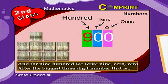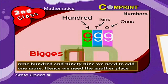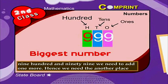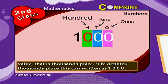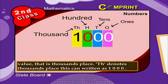For seven hundred, seven zero zero. For eight hundred, eight zero zero. And for nine hundred, we write nine zero zero. After the biggest three-digit number, that is 999, we need to add one more. Hence we need another place value — that is the thousands place. 'Th' denotes the thousands place.